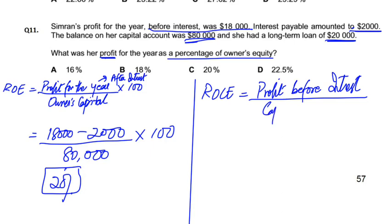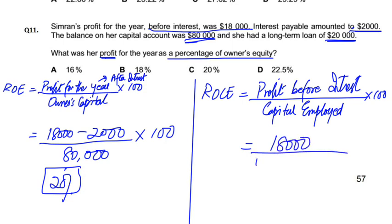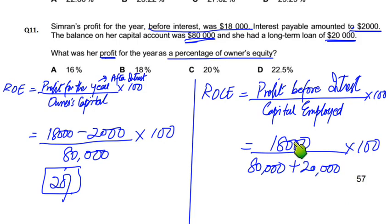The denominator is capital employed — which includes the owner's capital and the lenders' loan capital. In the question, profit before interest is given: 18,000. Capital employed = Simran's own investment of 80,000 plus loan of 20,000. Total earnings on 1,00,000 is 18,000, so that gives 18%.